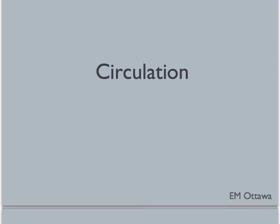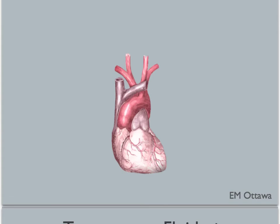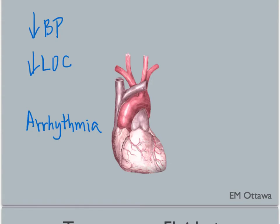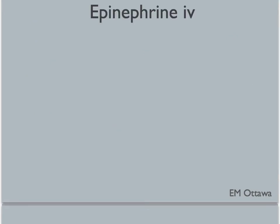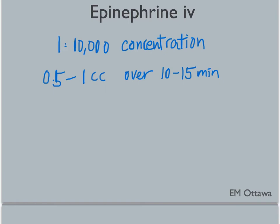Next, circulation assessment and treatment. Since the mediators cause vasodilation, they can cause hypotension and syncope. They can also cause decreased contractility, leading to more hypotension and potentially arrhythmia. We would want to put the patient on a cardiac monitor and ask for an EKG. How do we treat this? We give intravenous fluids — often starting with 1 to 2 liters. If the patient is still hypotensive after that, we often start a vasopressor such as dopamine or epinephrine. If we use epinephrine, we often use a 1 in 10,000 concentration as an infusion. The dose is 0.5 to 1 cc over about 10 to 15 minutes.